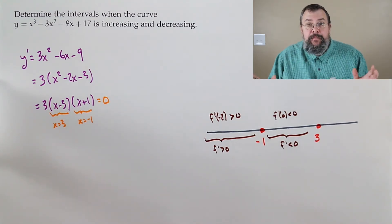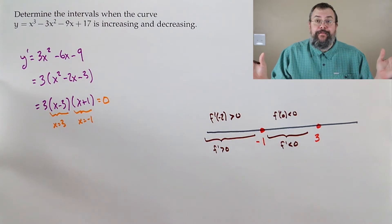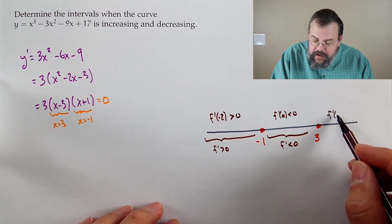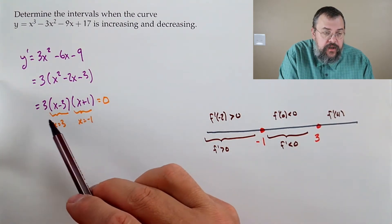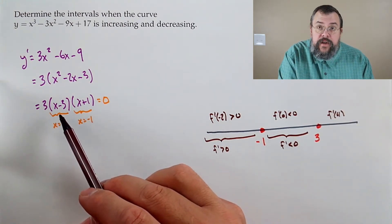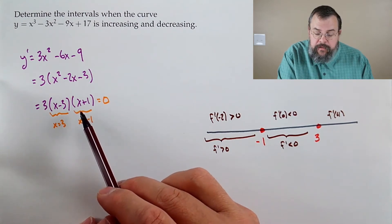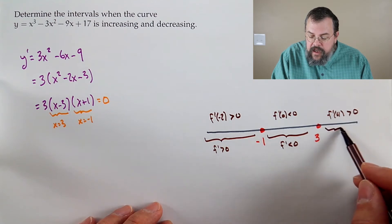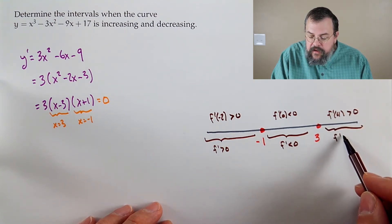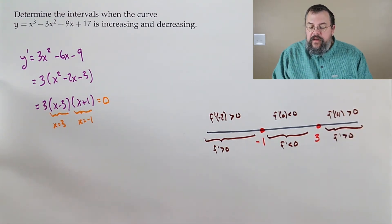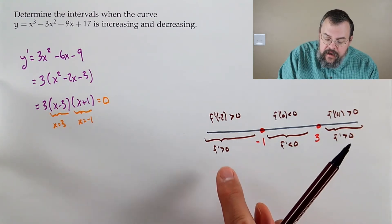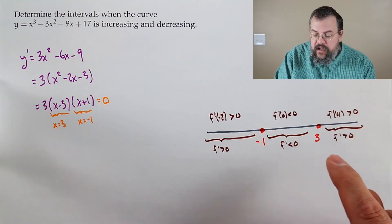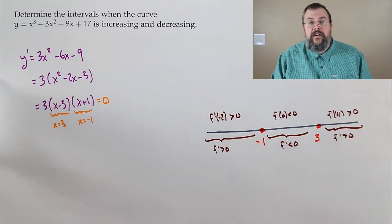Pick a number bigger than 3 — let's say 4. f prime of 4: 3 times (4 minus 3) is 1, positive; (4 plus 1) is 5, positive. So 3 times positive times positive is positive, meaning the derivative in this last interval is positive. We see switching behavior: positive meaning increasing, negative meaning decreasing, positive meaning back to increasing.